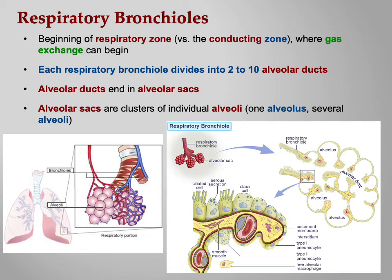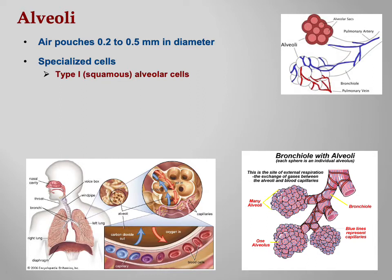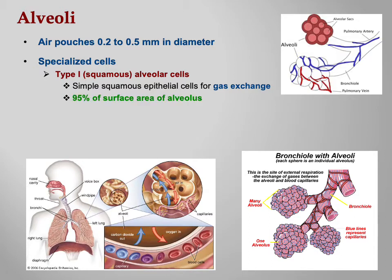The alveoli themselves are air pouches 0.2 to 0.5 millimeters in diameter — tiny little sacs. They have specialized cells inside. Type 1 alveolar cells, also called squamous cells, are simple squamous epithelial cells for gas exchange — this is where oxygen actually gets from air into blood and CO2 gets from blood into air. They make up 95% of the alveolar surface, because the whole goal of your lungs is gas exchange.